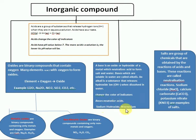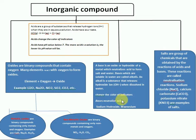Acid changes the color of an indicator. Base changes the color of an indicator. Acid has a sour taste, while base has a bitter taste. Acid changes blue litmus paper to red; base changes red litmus paper to blue.